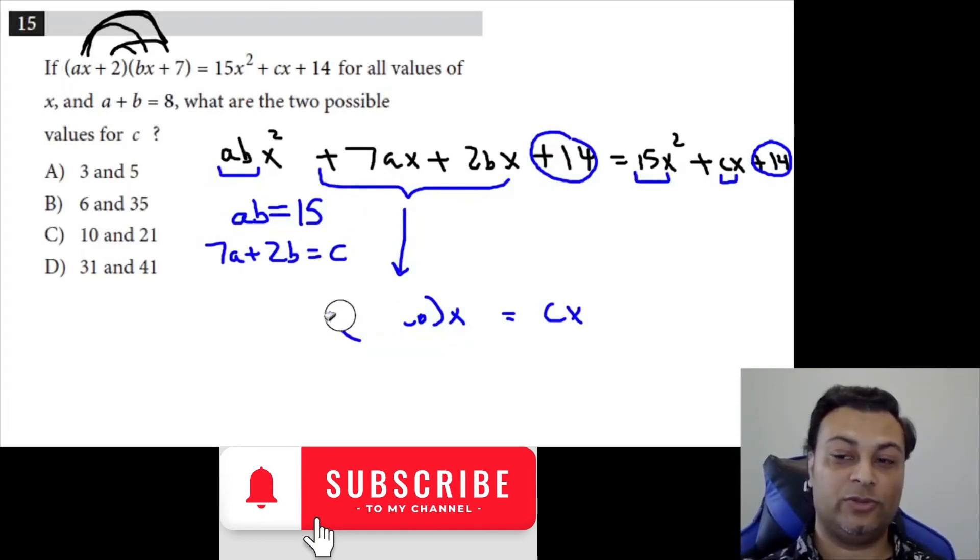Okay, so we have these two equations to work with. And we also have the fact that A plus B is 8. Okay, that's another equation. I should have written that out too. A plus B equals 8.